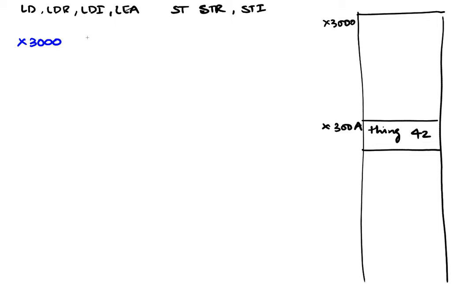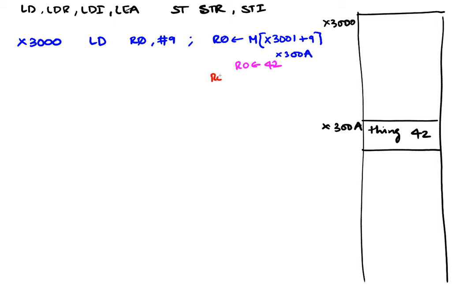Let's start with an instruction at x3000: LD R0, #9. Because this instruction is at x3000, it's going to load R0 with the value of the memory contents of x3001 plus 9, which is x3000A. So R0 currently has the value 42 because that's the memory contents of that location. We can say that R0 holds a copy of the thing.